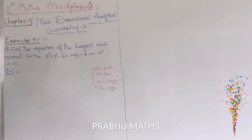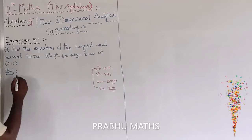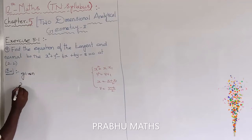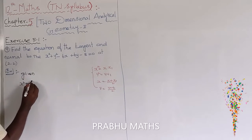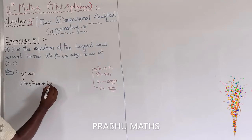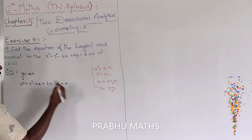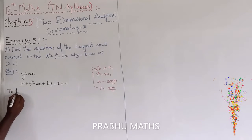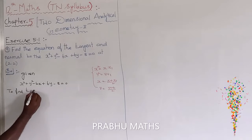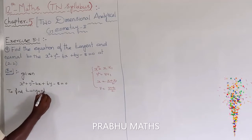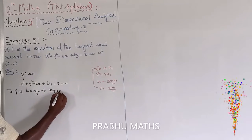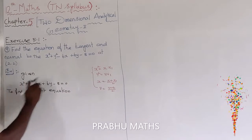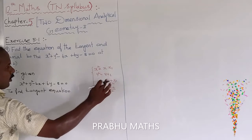First of all, the given circle equation is x² + y² - 6x + 6y - 8 = 0. To find the tangent equation, x² is replaced by xx₁ and y² is replaced by yy₁.